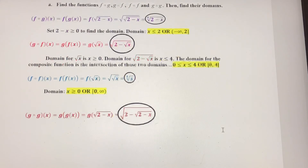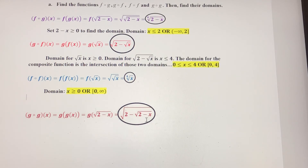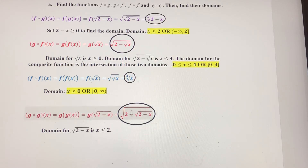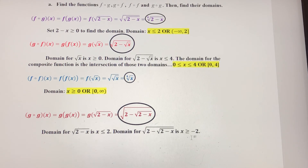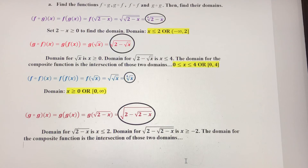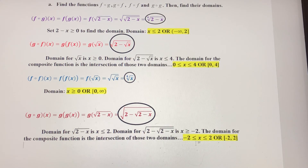For the domain of g of g, the inner square root of 2 minus x requires x less than or equal to 2 — we used that before. For the whole expression, we set 2 minus the square root of 2 minus x greater than or equal to zero. When we solve that, we get x is greater than or equal to negative 2. So the domain for this composite function is the intersection of those two: x is between negative 2 and positive 2 inclusive. Because both endpoints are included, we use brackets in our interval notation, giving us [-2, 2].